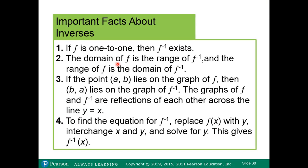Important facts about inverses: one, if f is one-to-one, then f⁻¹ exists. Two, the domain of f is the range of f⁻¹, and the range of f is the domain of f⁻¹. Three, if point (a, b) lies on the graph of f, then (b, a) lies on the graph of f⁻¹ — they are reflections across y equals x. Four, to find the equation of f⁻¹: replace f(x) with y, interchange x and y, then solve for y.